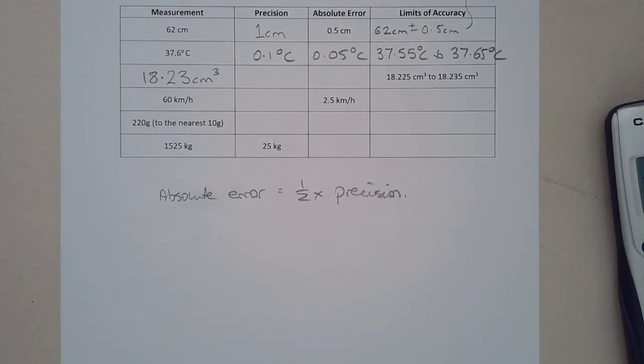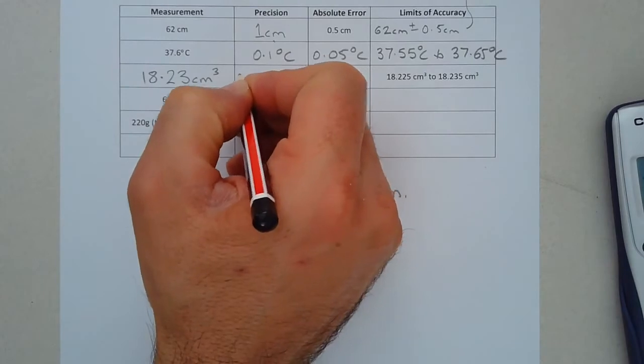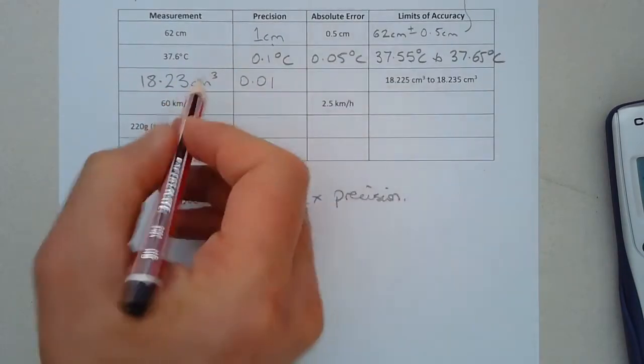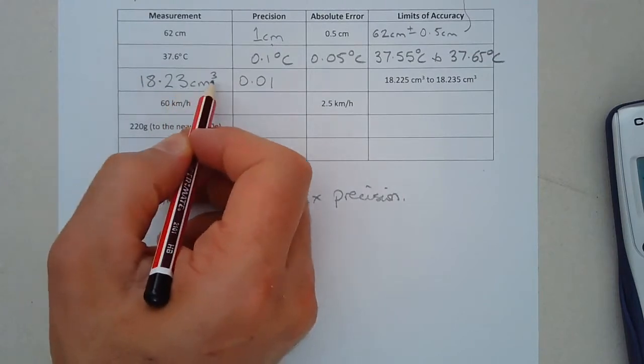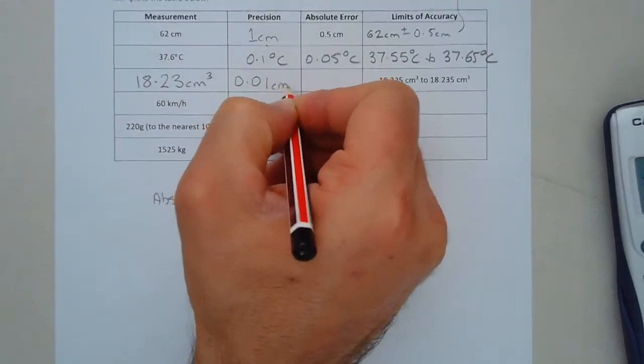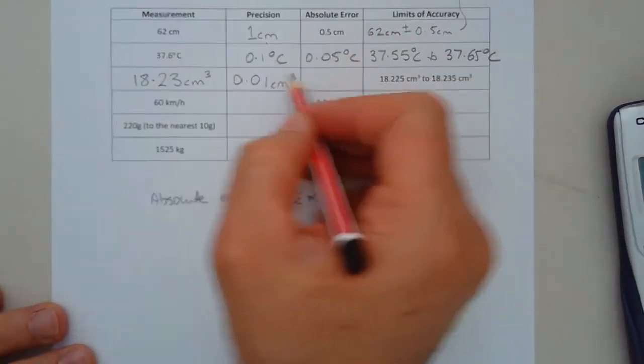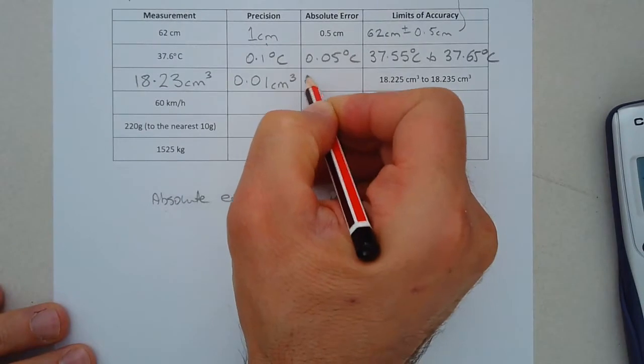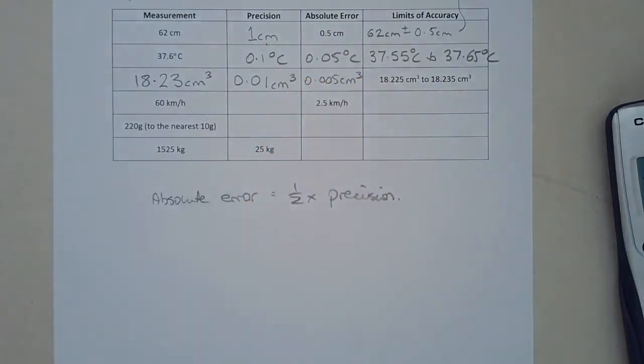What would the precision be? The precision could be implied from the measurement. So the precision would be 0.01 because it looks like we could measure not tenths but hundredths of a cubic centimeter. So the precision would be 0.01 cubic centimeters. The absolute error would be half of that. So that would be 0.005 cubic centimeters.